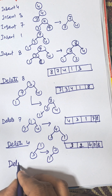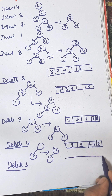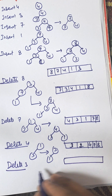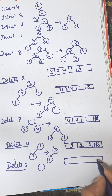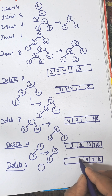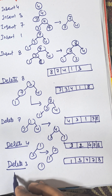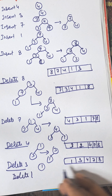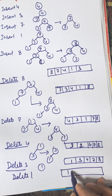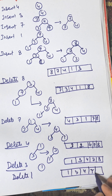Delete 3. The array will be 8, 7, 4, 3, and 1. Finally delete 1, and the sorted array is 1, 3, 4, 7, 8.